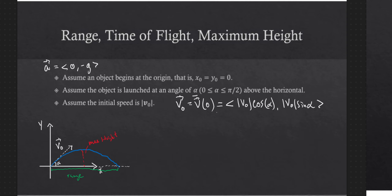This is our initial velocity. We should now be able to recover the position, and for this problem we're going to assume that the object begins at the origin. The formulas we're going to develop for range, time of flight, and maximum height have to rely on these assumptions — if they aren't true, the formulas won't be valid. Our assumptions are starting at (0,0), launched at angle alpha above horizontal with initial speed v naught.